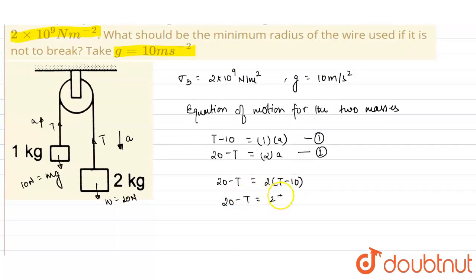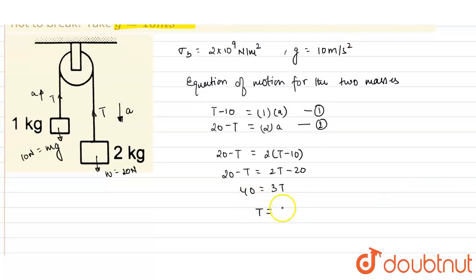On solving, we get 20 - T = 2T - 20, so 40 = 3T, or the tension in the string generated will be T = 40/3 newtons.